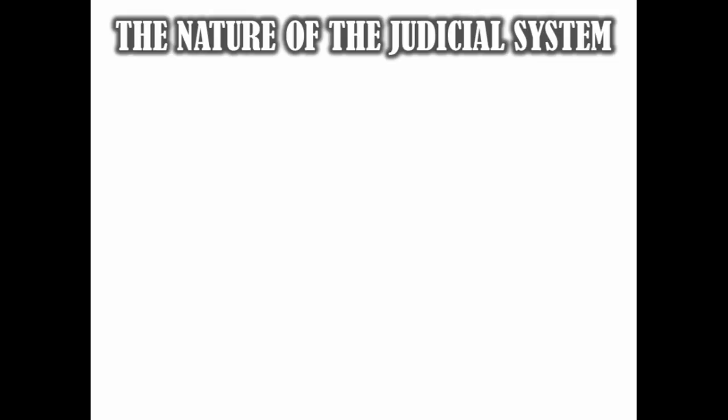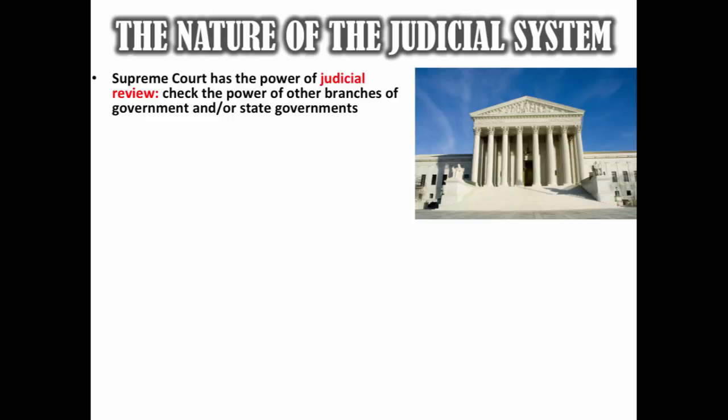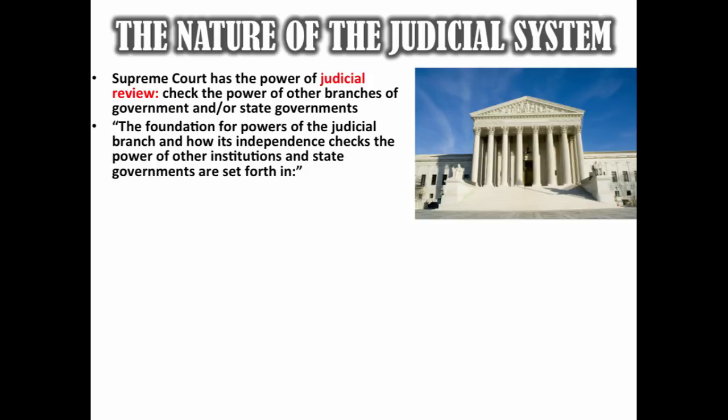First we need to take a look at the nature of the judicial system. It's important to note the Supreme Court has the power of judicial review — make sure you know that term. This means they can check the power of other branches of government and state governments. In short, the Supreme Court can declare laws constitutional or unconstitutional.